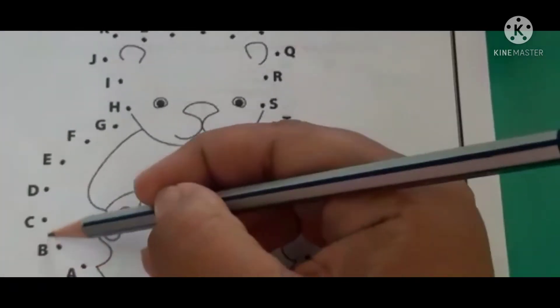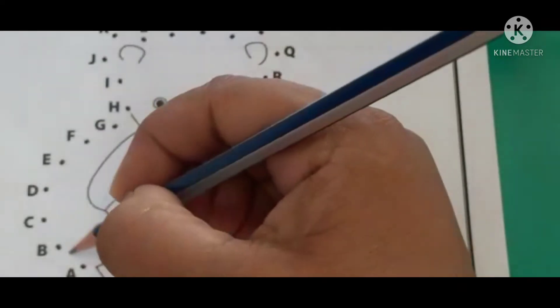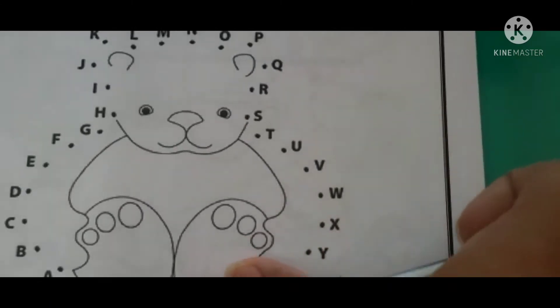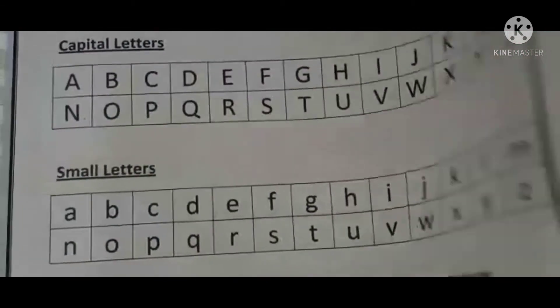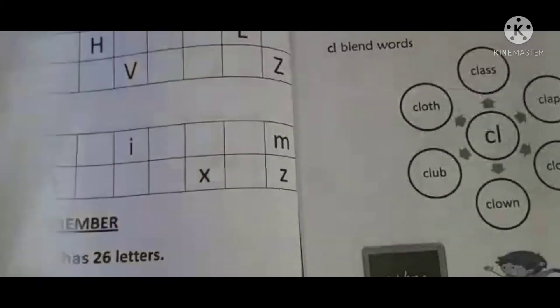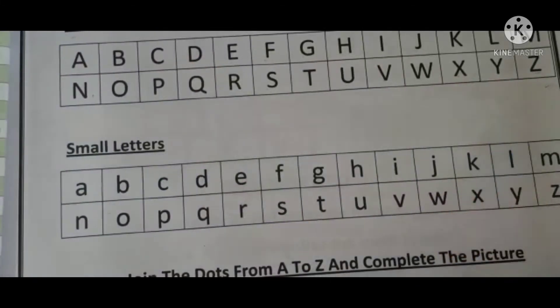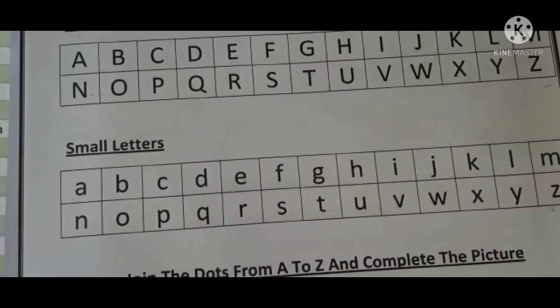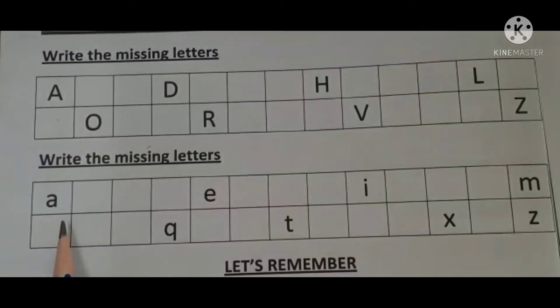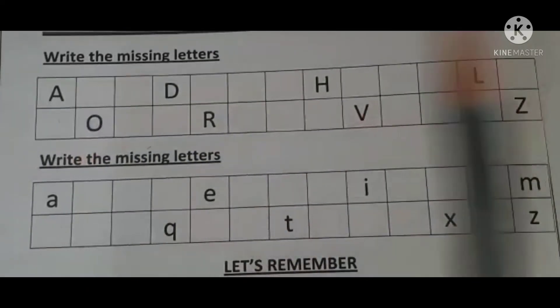Now, under the small letters, there is a picture given with dots. You just have to join all the alphabets given and see what picture comes out, and you also have to color it. Then turn the page — here, as we have seen in the previous page, there is A to Z in capital letters and A to Z in small letters. In the next page, there are missing letters given for capital letters as well as small letters, and you just have to complete the boxes.